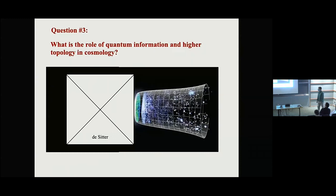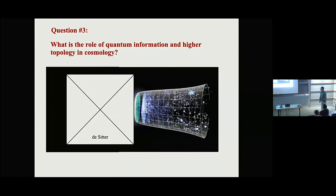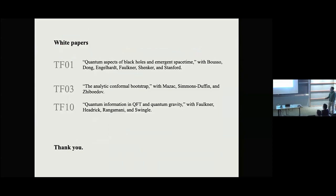Question three: what is the role of quantum information and higher topology in cosmology? I'm not going to speculate on the best approach — this is presumably the hardest of the problems I'm posing. But it's also the most interesting. We understand quantum gravity a little better than we did ten years ago, so the question is: can we take what we've learned and apply it to cosmology? Here are some white papers where you can read more — thank you for your attention.